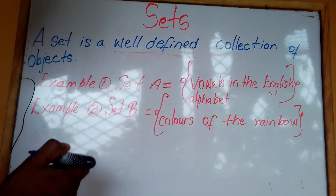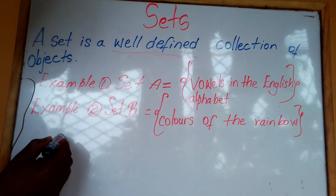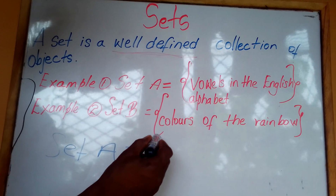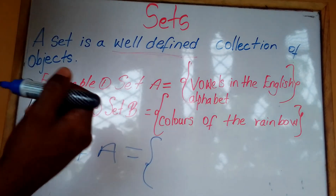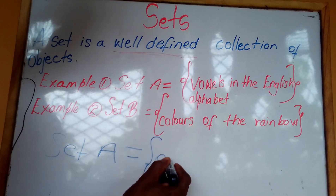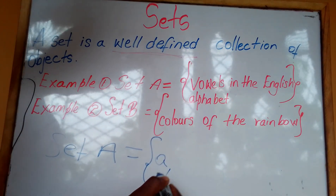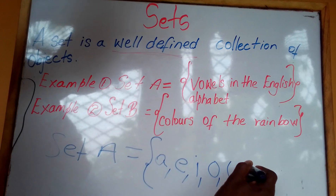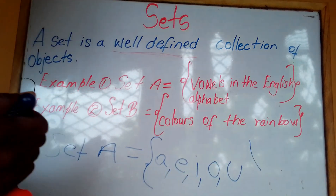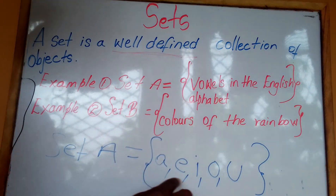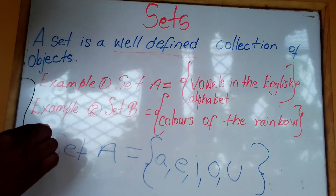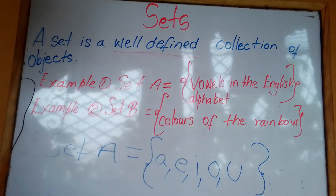So Set A contains vowels in the English alphabet. Set A would be written as: open curly bracket — the alphabet. We know that A would be the first letter, E would be the second, we have I, and we have O, U. So we close the bracket. These are the members of Set A, which are the vowels in the English alphabet.